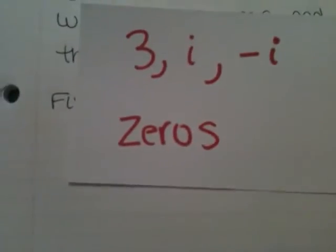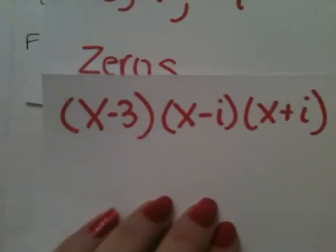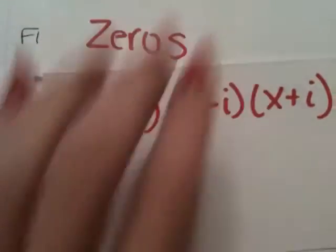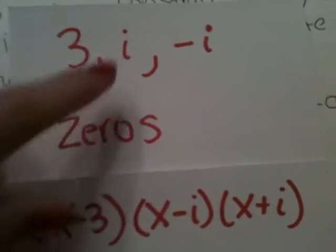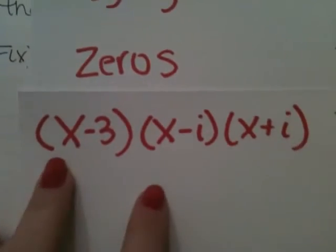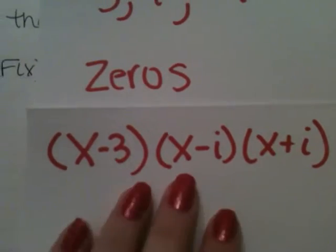You start out by writing the zeros in a factored form like this. Basically, just take the opposite of what's here, and you're going to multiply all this out to give you your polynomial.